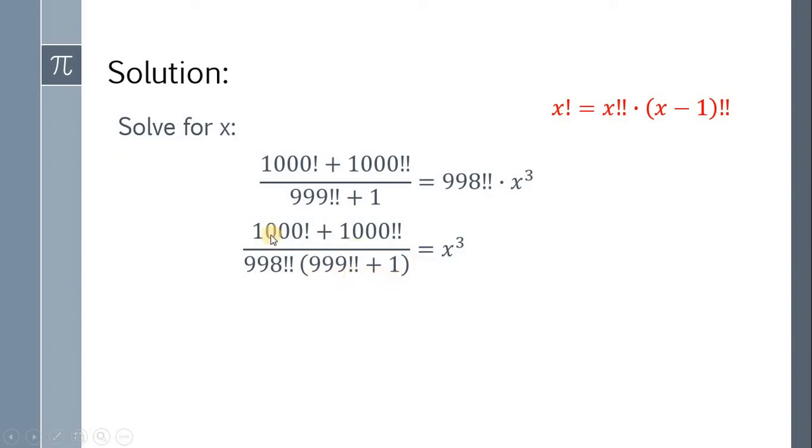Now factor out 1000 on the numerator and distribute 998 double factorial to the denominator. So we will get 1000 multiplied by 999 factorial plus 998 double factorial all over 999 double factorial times 998 double factorial plus 998 double factorial.